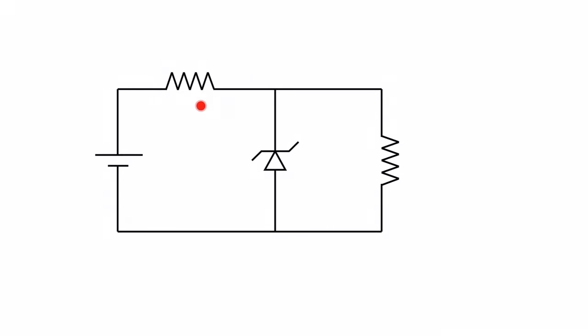Now we also have to have a current limiting resistor on this side as well. So you've got your load and your current limiting resistor. Now let's throw some values at this to walk through how this all works.